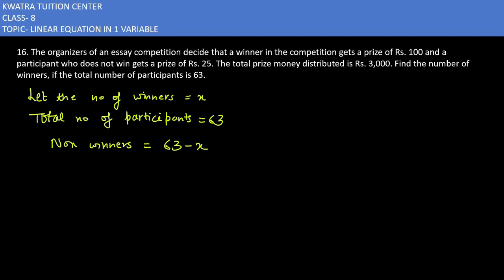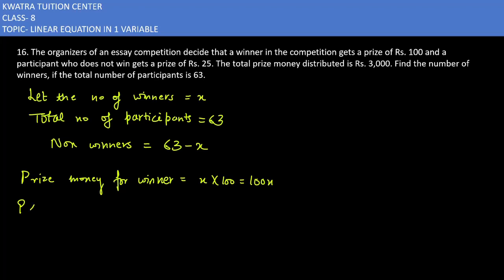Whoever wins will get Rs.100, so the prize money for winners is x multiplied by 100, which equals 100x. Now, the prize money for non-winners would be 25 multiplied by (63 minus x), because the number of non-winners was 63 minus x.